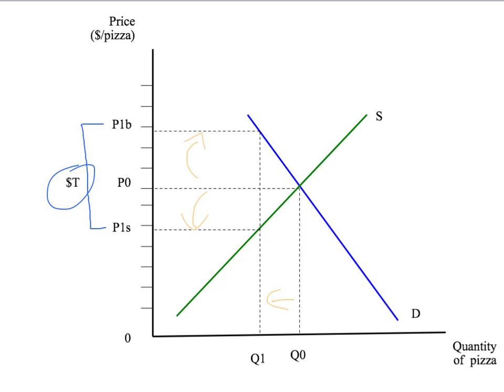Notice that because price has gone up to buyers and they buy less, buyers are made worse off by the tax. That's logical — if you have to pay more for something, you're going to be worse off. Conversely, sellers receive a lower price, so sellers are also worse off. So the burden of the tax — the cost of the tax — to the consumer and producer is split between the consumer and producer, and we want to analyse how that split arises.